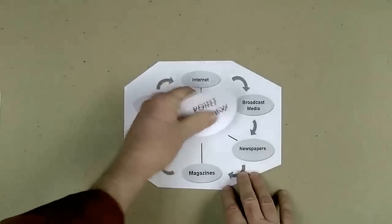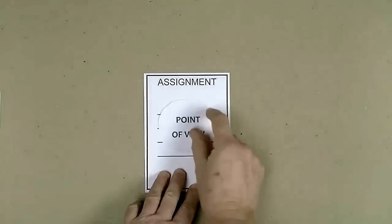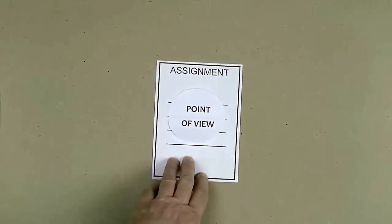In the information cycle, find the point of view that meets your real information need and get information from that point of view into your college writing assignment. Let's try it.